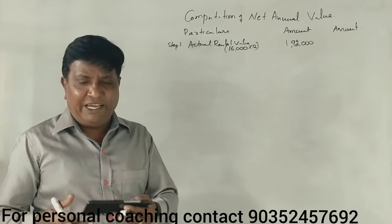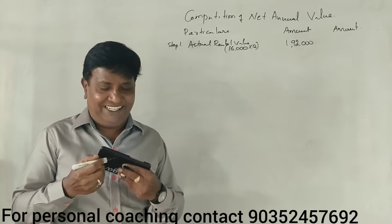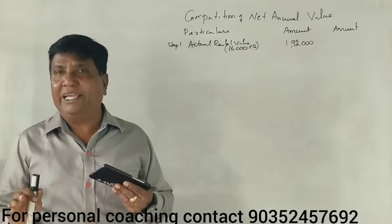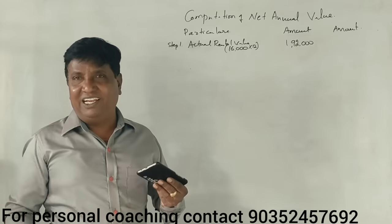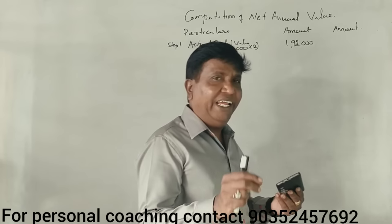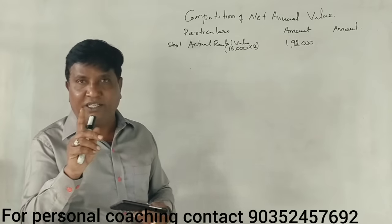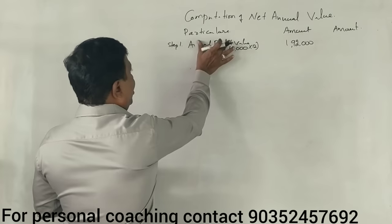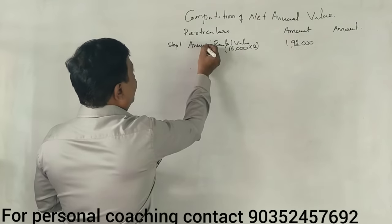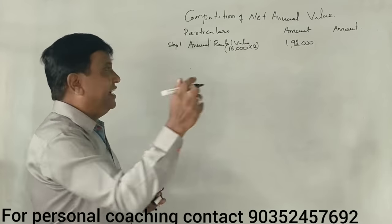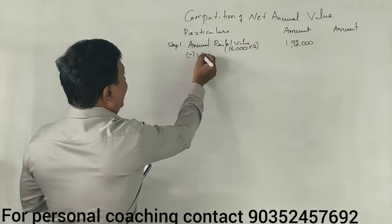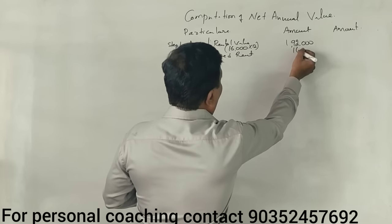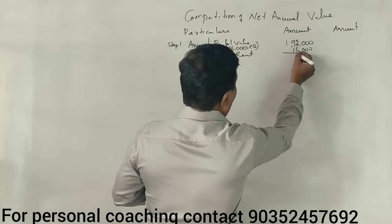Now we have unrealized rent. That means one month's rent is not realized. So the actual rental value is the annual rental value minus the unrealized rent. The unrealized rent is for one month. So we deduct one month's rent from the annual rent to get the actual rent received.